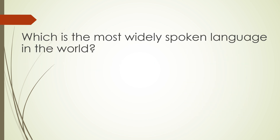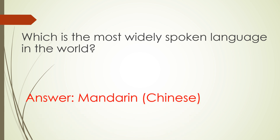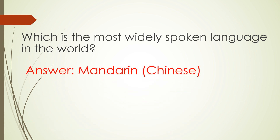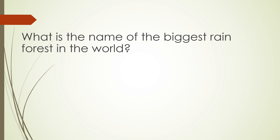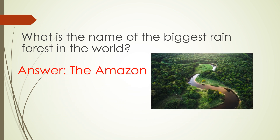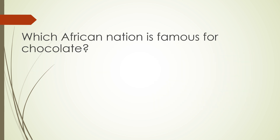Which is the most widely spoken language in the world? Answer: Mandarin. During which year did World War One begin? Answer: 1914. What is the name of the biggest rainforest in the world? Answer: the Amazon. Which African nation is famous for chocolate? Answer: Ghana.